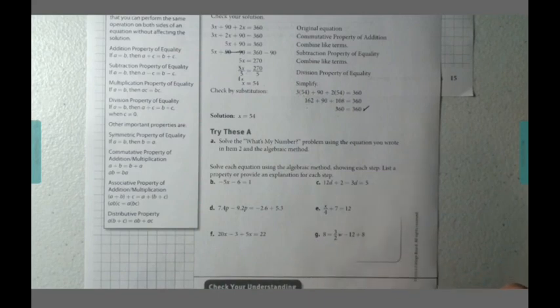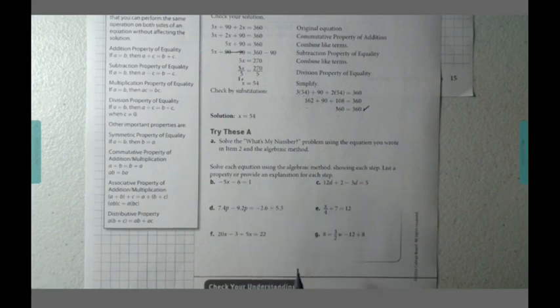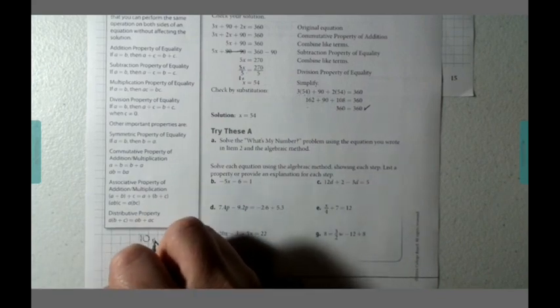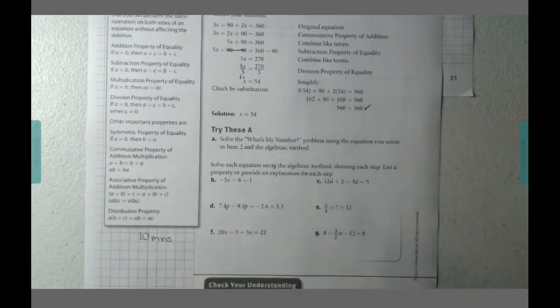And then you will do the same for B through G. Solve the equation using algebraic method. Show each step. Use the property or list the properties or provide an explanation for each step. You might want to do this on a piece of scratch paper because clearly you're not going to have enough space to write all the answers here. So, go ahead. Take 10 minutes to work with your table mates and complete the try these A.